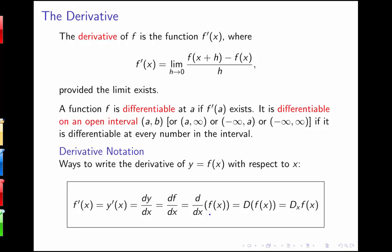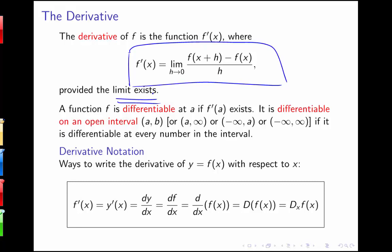Here's our definition. This definition extends the derivative at a point to a derivative at any value x. The derivative of f is the function f prime of x, where f prime of x equals the limit as h goes to 0 of f of x plus h minus f of x, all over h, as long as that limit exists. The derivative exists if this limit exists — namely if the limit is the same from the left and the right. We call a function differentiable if that limit exists, and we can talk about a function being differentiable on open intervals if it's differentiable at every number in that interval.